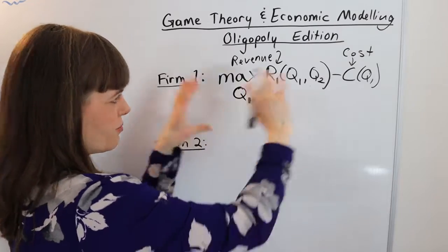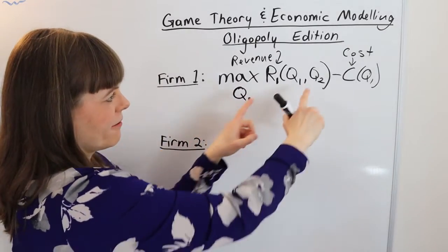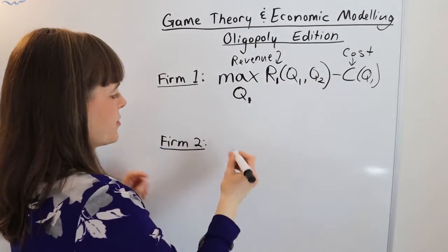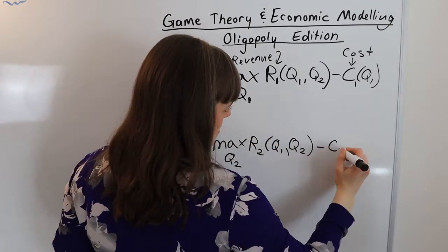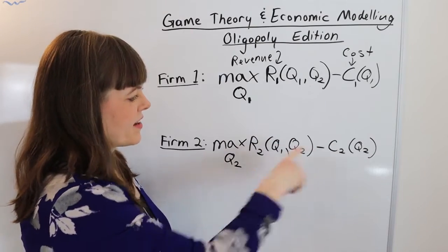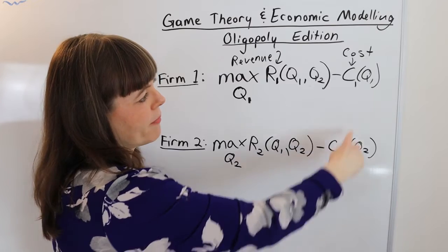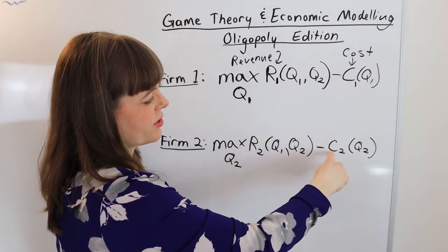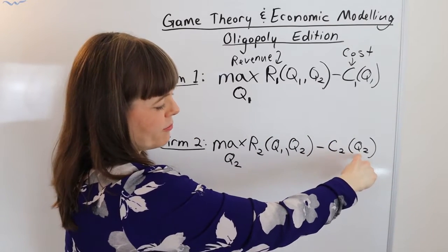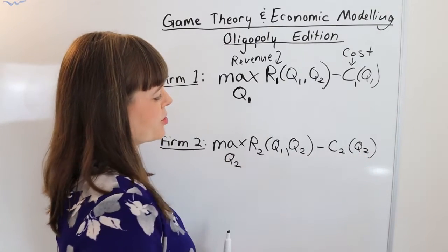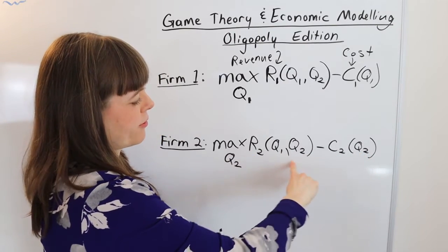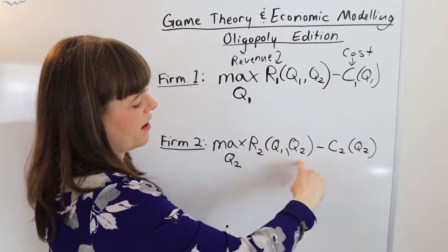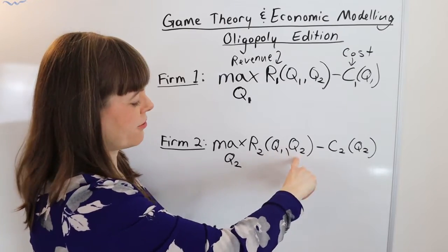In which case I'm just going to redo this equation down here flipping the ones and the twos. Okay so the costs also might be different between the firms. So this is cost to firm two which depends on the quantity that firm two produces. Revenue of firm two depends on quantity that firm one and firm two produce.